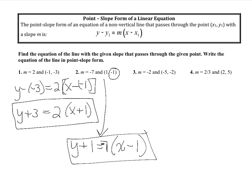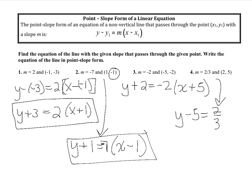For number 3: y minus the y-value of negative 2 gives y plus 2, equals the slope of negative 2, times (x minus negative 5), which becomes x plus 5. For number 4: y minus the y-value of 5 gives y minus 5, equals the slope of 2 thirds, times (x minus the x-value of 2).